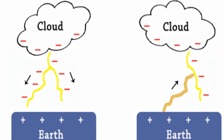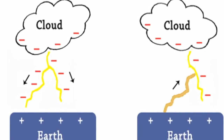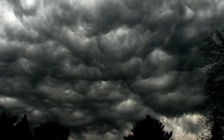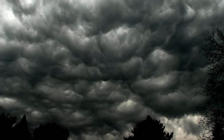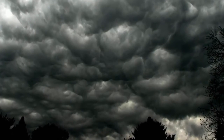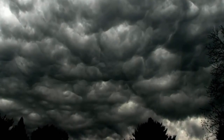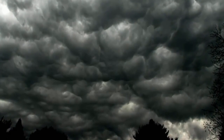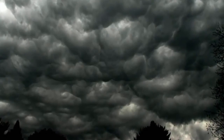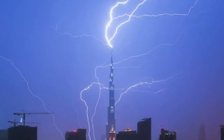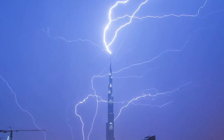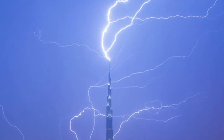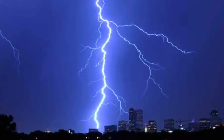The charged cloud sends out stepped leaders, or electrically conductive channels of partially ionized gas. As these leaders approach the earth, opposite charges on the ground create upward channels called streamers. When the downward leaders and upward streamers meet, lightning forms to balance the charges.